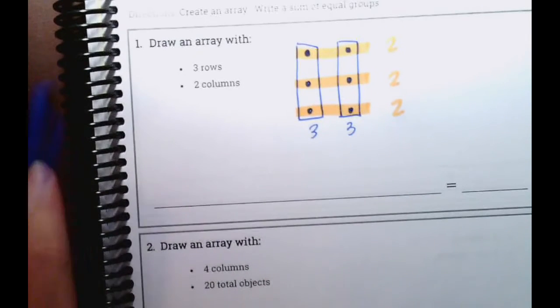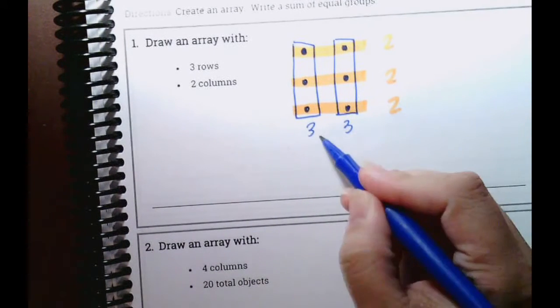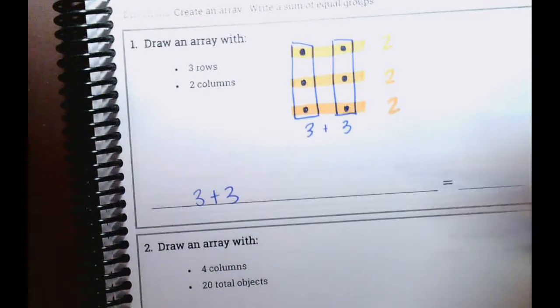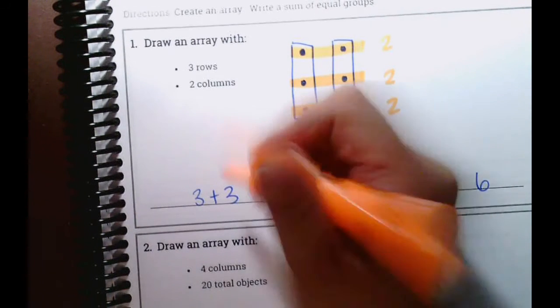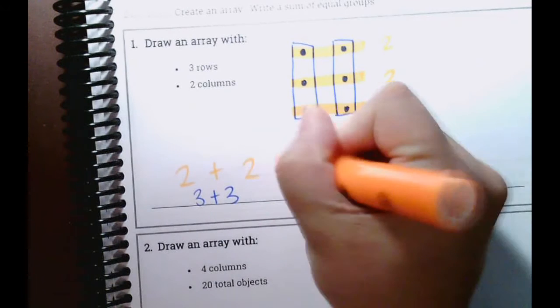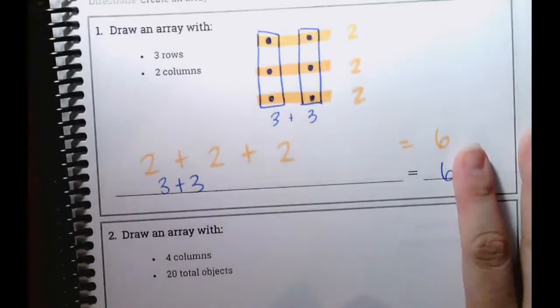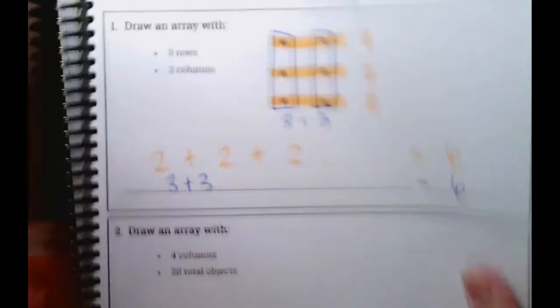All you have to do now is write your addition sentence. So you can either write three plus three equals what? Six. Good. Or you can write two plus two plus two equals six. And if you did it correctly, just like yesterday, your sum would be the same. And is it? Yeah, it is. Good job.